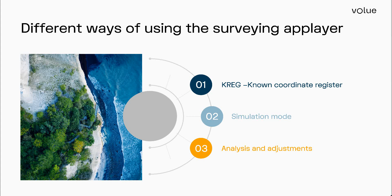The second thing I'm going to talk about is using the surveying app layer in simulation mode. This way you can plan the surveying before you even go out and measure. This will hopefully lead to saving both time and resources, because then you can check that you actually can see between the points before you go out and do the measurements. You can also check that you have enough points and station observations to ensure you are within the requirements of the survey, and test what quality you can expect from the network before making any field measurements.